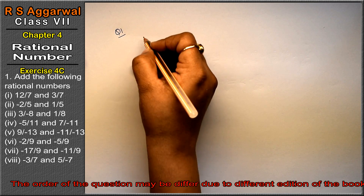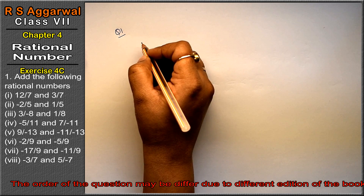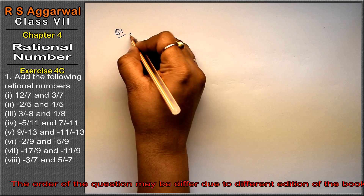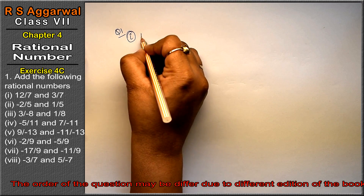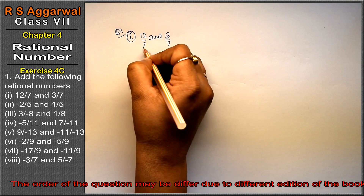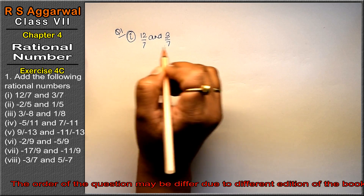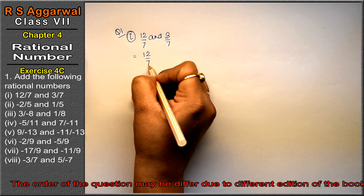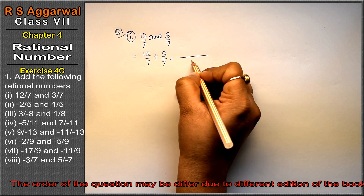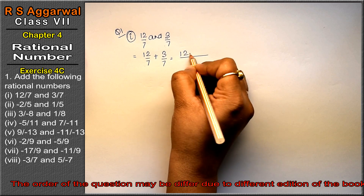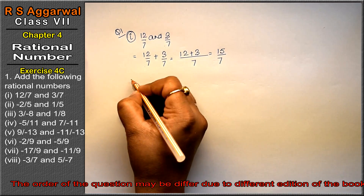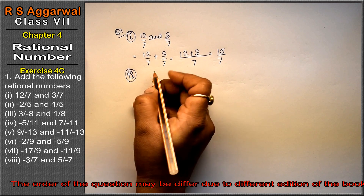Let's do question number 1 of Exercise 4c on rational numbers. We need to add the following rational numbers. First part: 12 upon 7 and 3 upon 7. The denominator in both is the same, so simply write 12 upon 7 plus 3 upon 7. LCM is 7, so write 7 as it is and the values above as it is. That means 12 plus 3 = 15 upon 7 is the answer.